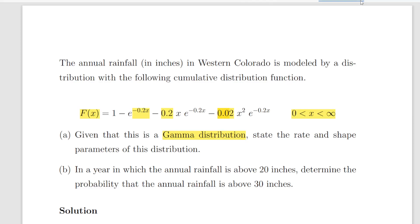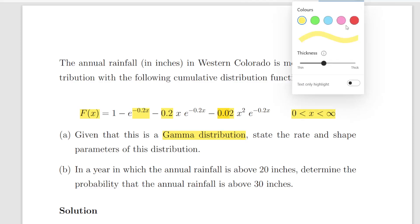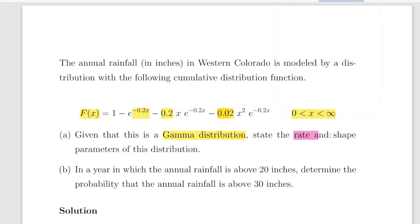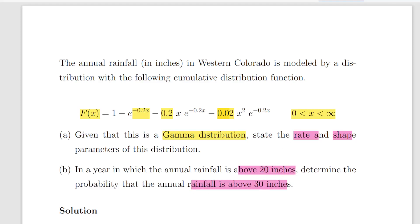What we're asked to do here is state the rate and shape parameter of the gamma distribution, and then determine: in a year in which the rainfall is above 20 inches, determine the probability that the rainfall is above 30 inches. That's a straightforward conditional probability.